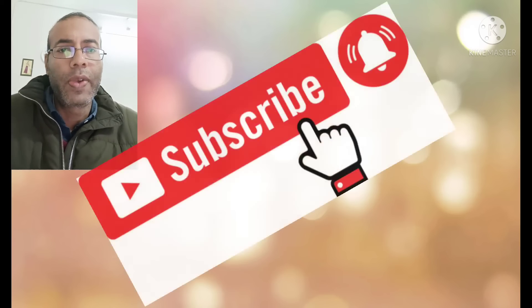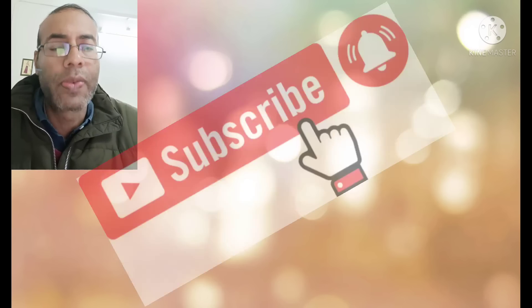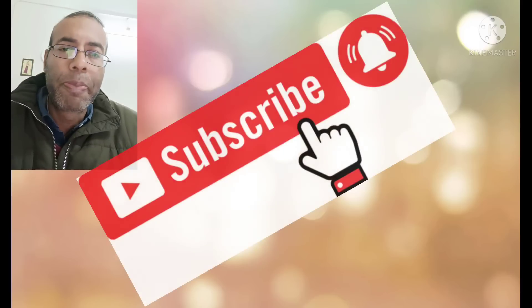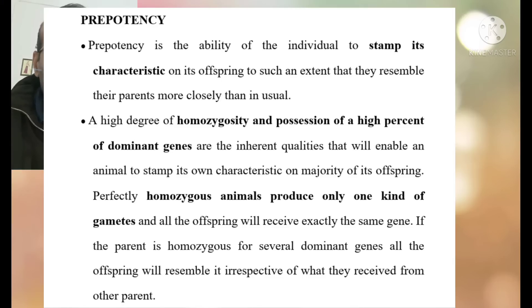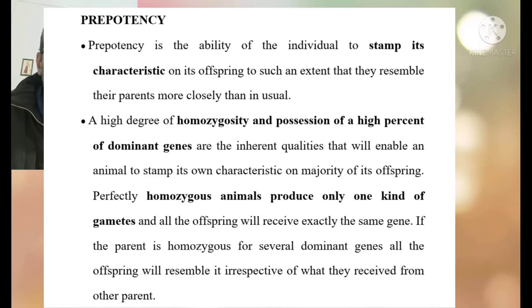Now I will discuss the important concept of prepotency. The concept of inbreeding is generally connected with prepotency. Prepotency is the ability of an individual to stamp its characteristics on its offspring, and the capacity of prepotency of an individual is increased due to inbreeding, because of the increase in homozygosity of that individual.